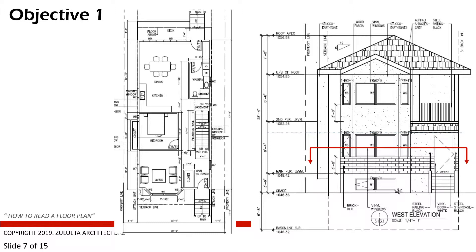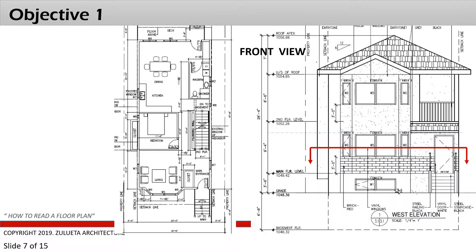This slide shows the front of the house and the corresponding floor plan. On the right side is the front view of the house, with the red line and red arrow showing where the horizontal plane is. When you cut that horizontal plane across the front of the house, what you have on the left side is your main floor plan. The front of the house and the main floor plan correspond to each other.